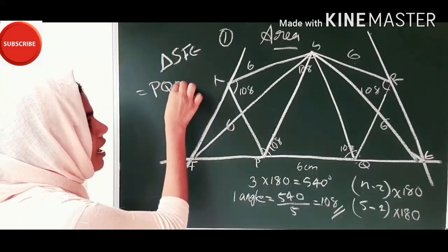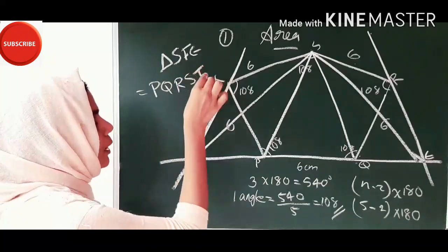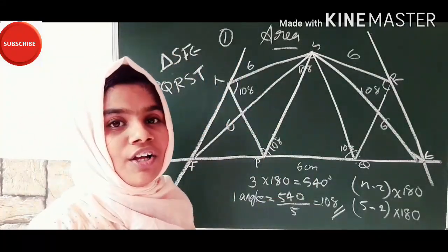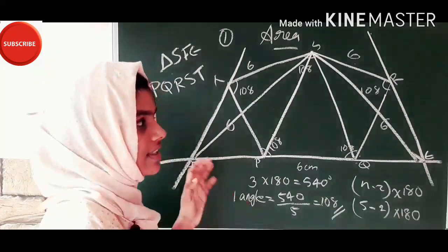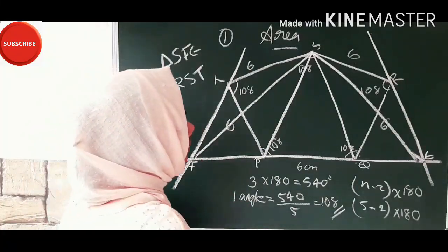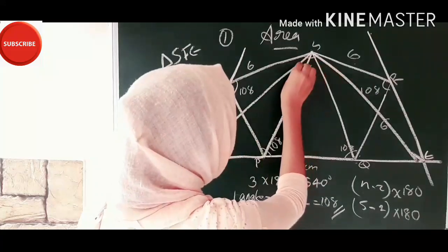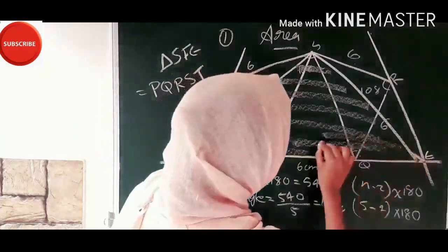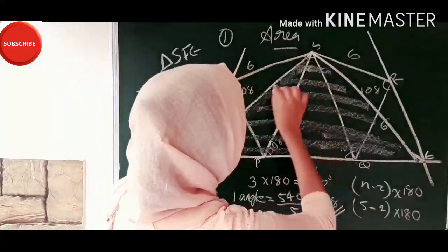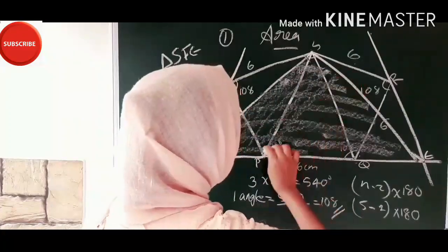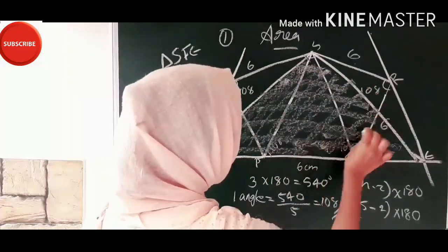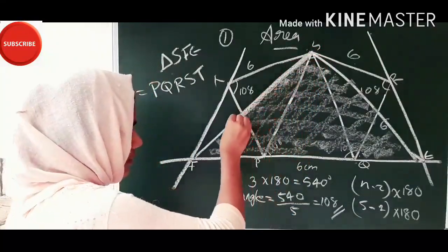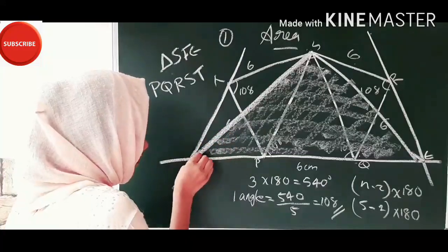P, Q, R, S, T — what is PQRST? S, F, E, M. If you have a triangle here, you can see a triangle here. If you have a triangle here, you can see a triangle here.